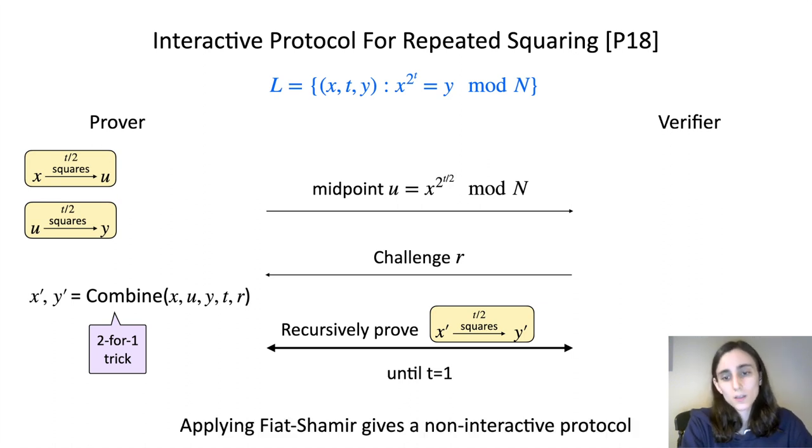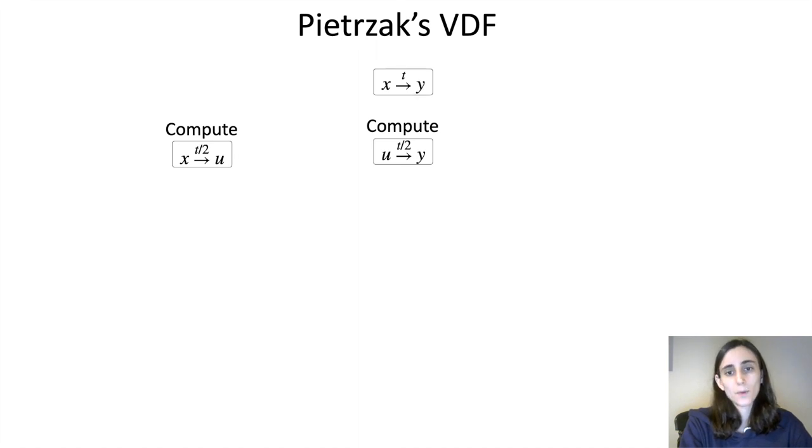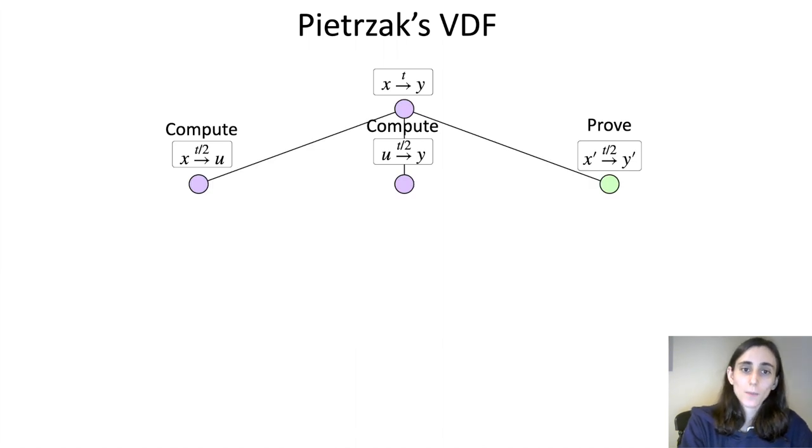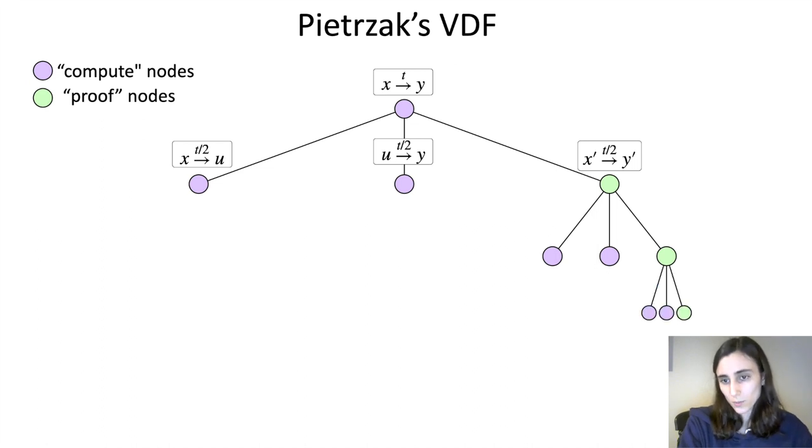When you apply Fiat-Shamir, this is a non-interactive protocol. So as a VDF, this looks like the following. Starting with x and a time bound t, we compute the midpoint u, then we compute the output y. Now we have the output, but we still need to prove it, so now we prove this x prime and y prime statement, the combined statement. This can be naturally viewed as a tree, where I'm going to denote compute nodes, so nodes that require this squaring computation, by purple nodes, and I'm going to denote proof nodes by green nodes. So the next step in the interactive protocol that we saw in the previous slide is to recurse. So we take this proof node and we recurse. We do two compute nodes and a proof node, two compute nodes and a proof node, until we get down to the base case where we can verify it directly.